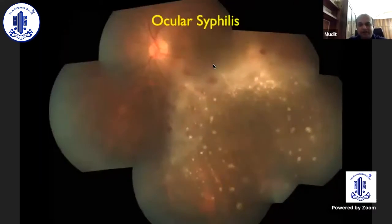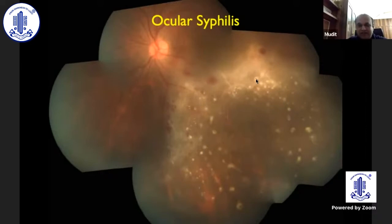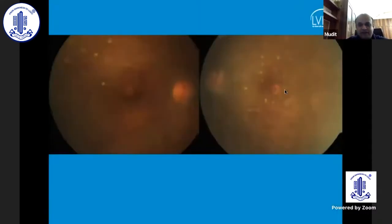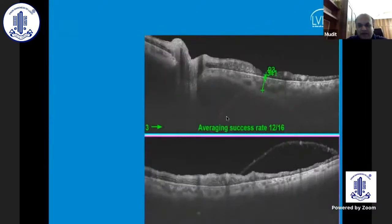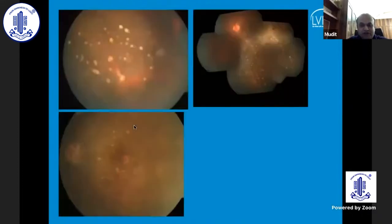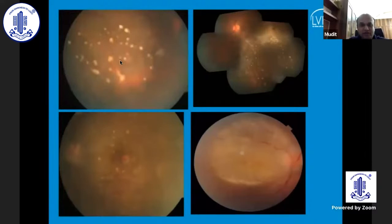Dr. Alok will be discussing ocular syphilis separately, so I will not dwell upon it much. But syphilis can also be recognized by its common pattern. If you see multiple miliary lesions and a ground-glass retinitis with central clearing, think ocular syphilis — this pattern is characteristic. On OCT through these lesions, you will see full-thickness retinal involvement. This was something we had published earlier. The four patterns of syphilis include: miliary lesions, miliary lesions with central clearing and ground-glass retinitis, a patient with miliary lesions, and a placoid chorioretinitis. When you see these patterns, think ocular syphilis.